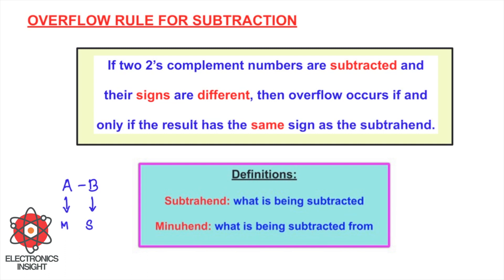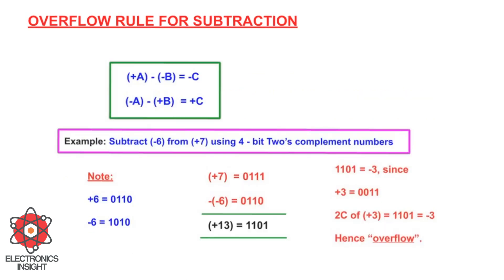With a basic example we will try to understand the subtraction overflow rule. The rule is: two two's complement numbers have different signs, and overflow will occur if the result has the same sign as the subtrahend. For instance, if the subtrahend is −b and the result is +c (same sign as −b would be negative), or the subtrahend is +b and the result is +c, that indicates overflow.